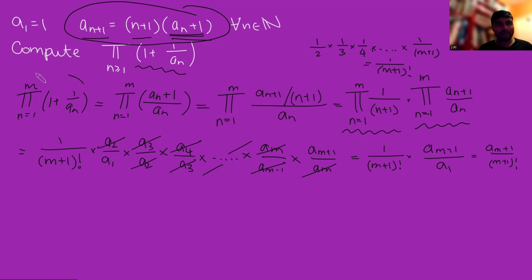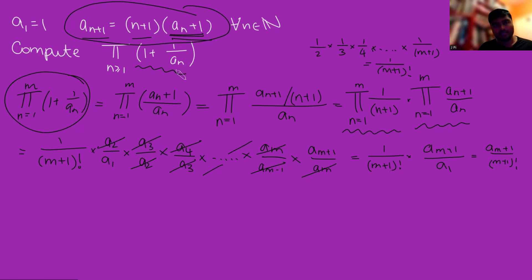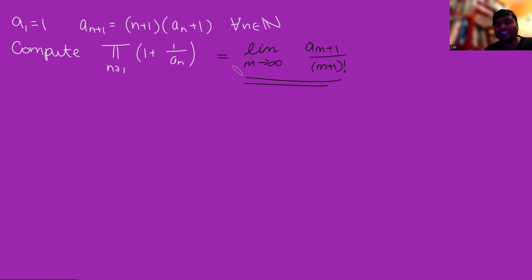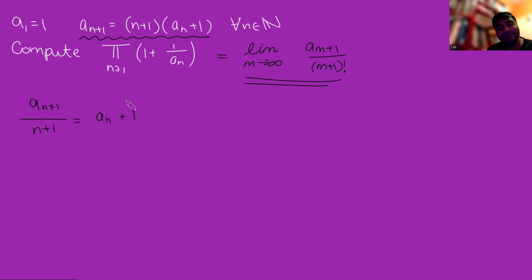So we've shown that the finite product from n=1 to m of 1 + 1/a_n equals a_{m+1}/(m+1)!. To answer the original problem, we simply need to take the limit as m goes to infinity of this expression. In order to compute this limit, we go back to the recurrence equation and divide both sides by (n+1), giving a_{n+1}/(n+1) = a_n + 1.